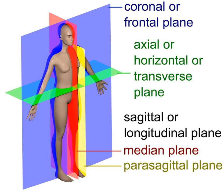The following terms are defined in reference to the anatomical model being in the upright orientation. A transverse, also known as axial or horizontal plane, is parallel to the ground; in humans it separates the superior from the inferior, or put another way, the head from the feet. A coronal, also known as frontal or lateral plane, is perpendicular to the ground; in humans it separates the anterior from the posterior, the front from the back, the ventral from the dorsal.